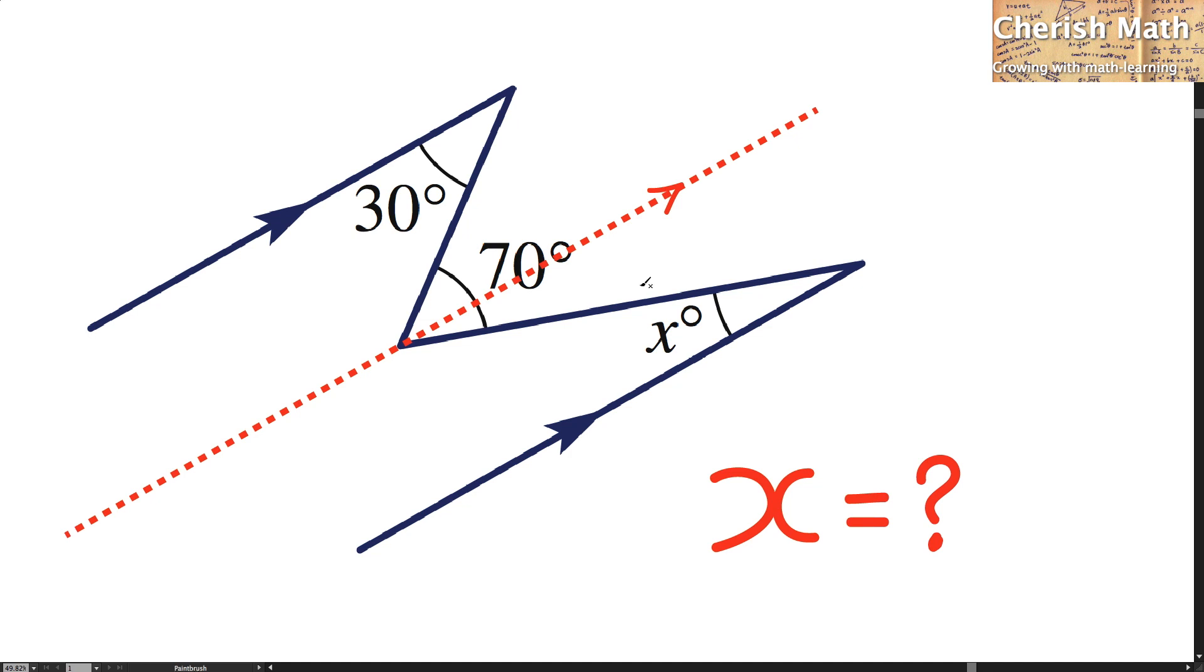And I am going to deal with the 30 degrees here. This is exactly the same as the one that I have highlighted here. The reason why is because it is an alternate angle.